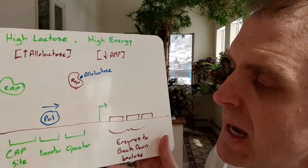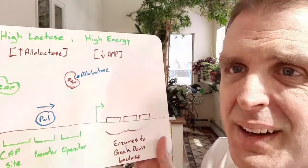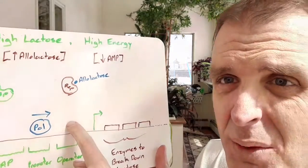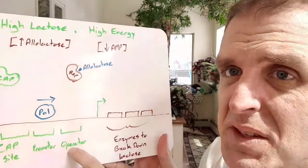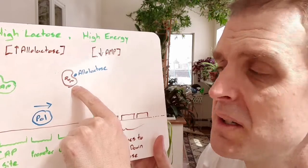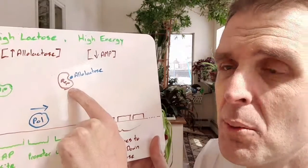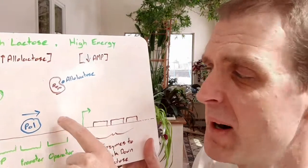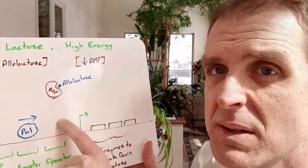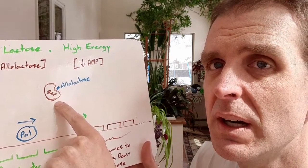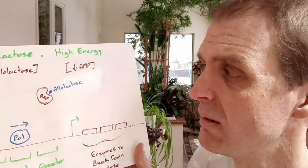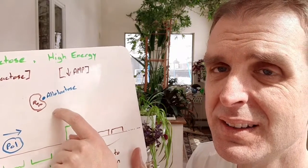The polymerase comes in, and we've got an arrow showing that it's going to want to go and transcribe these genes. There's where the repressor could possibly sit on this operator, but because there's allolactose in the cell, the repressor has released. Just quick to compare to the trp operon, when tryptophan was around and bound to the repressor, that is when the repressor could stick to the operator.